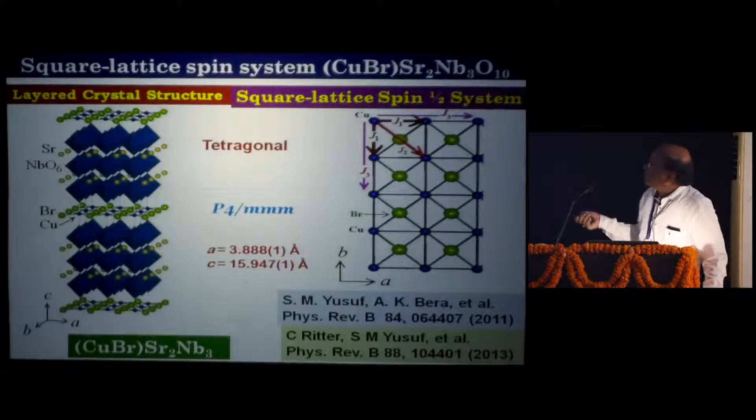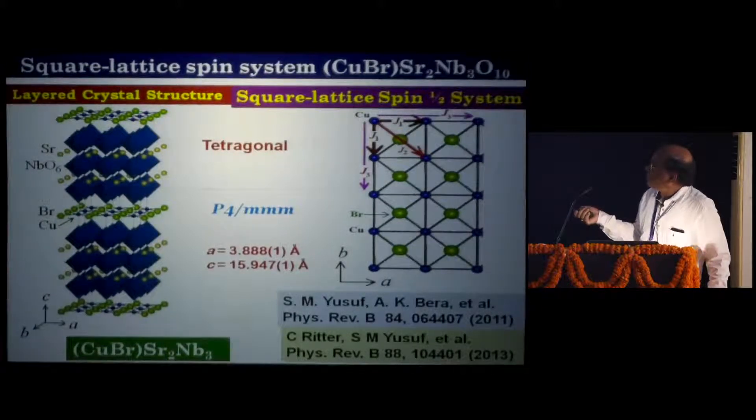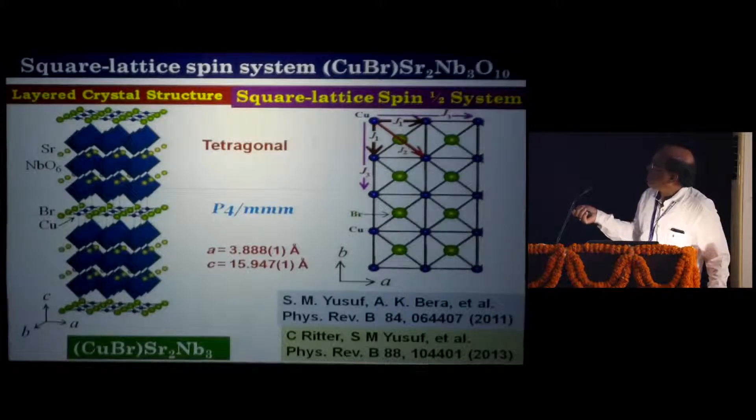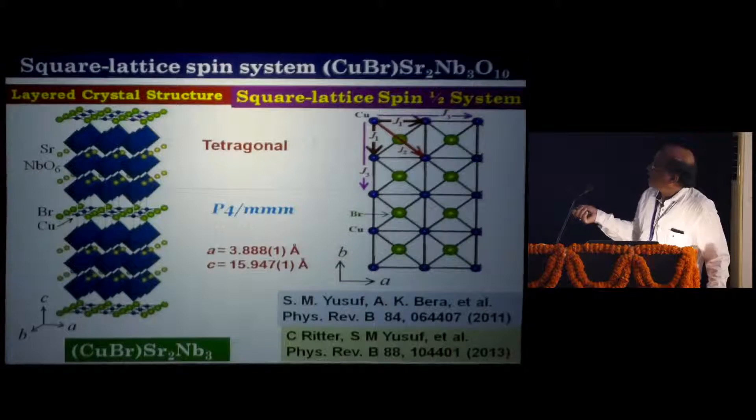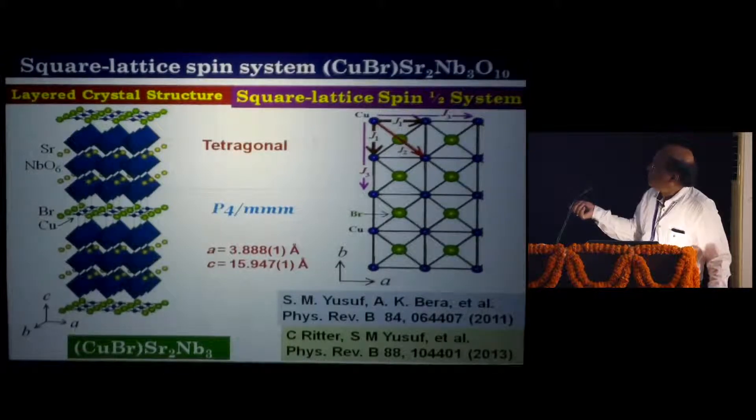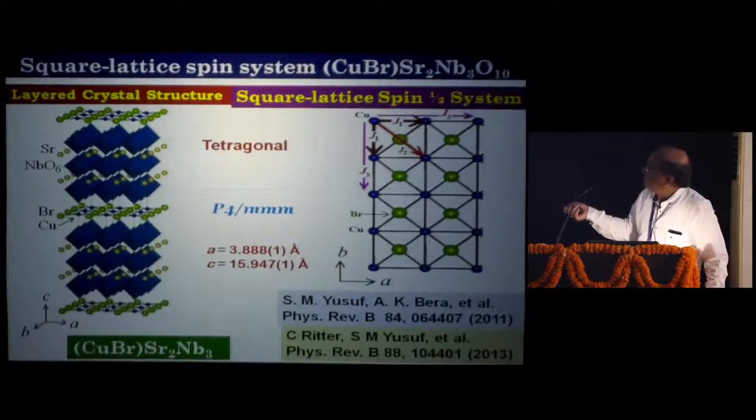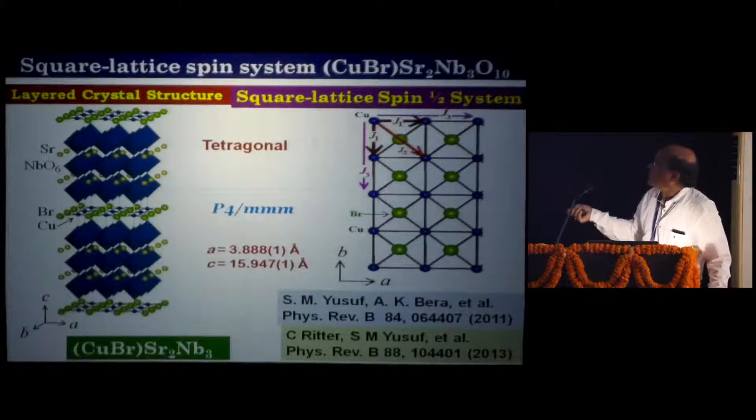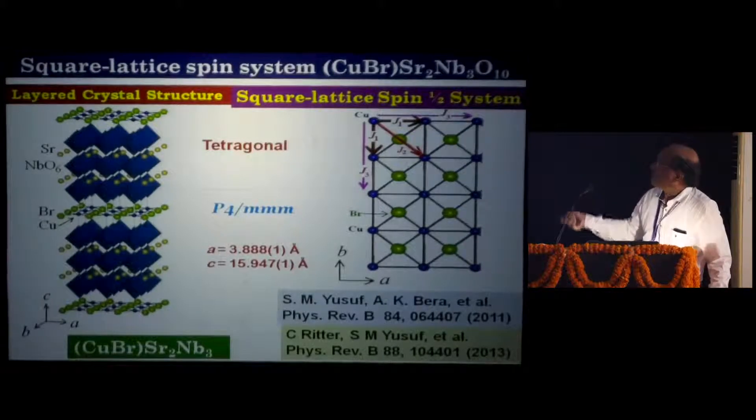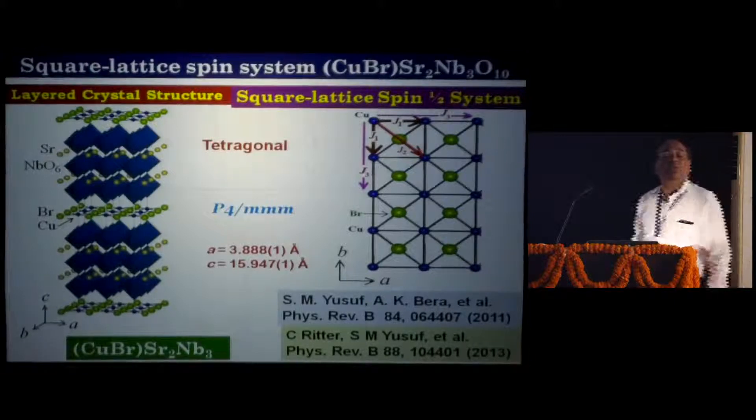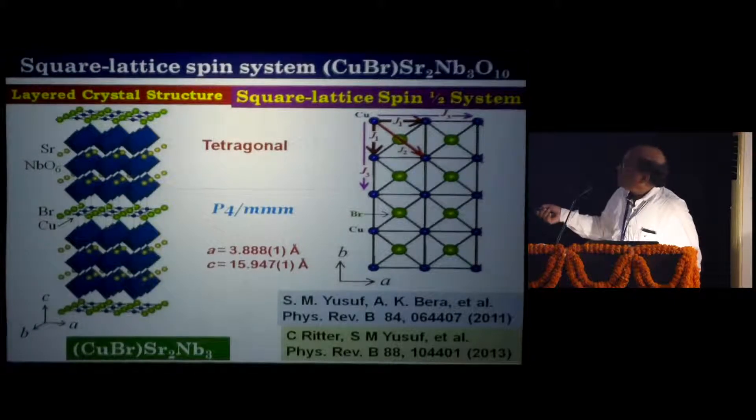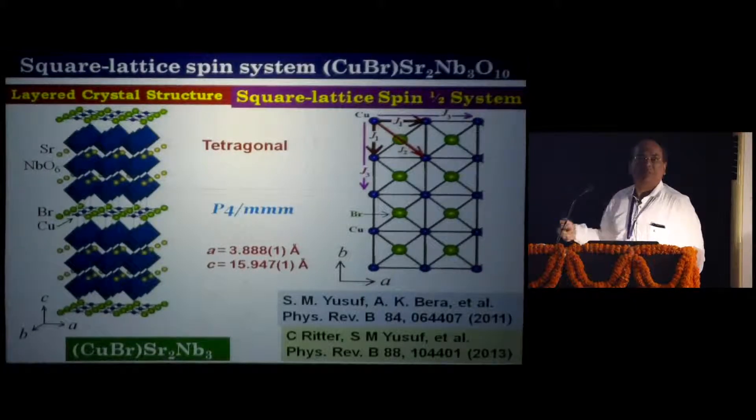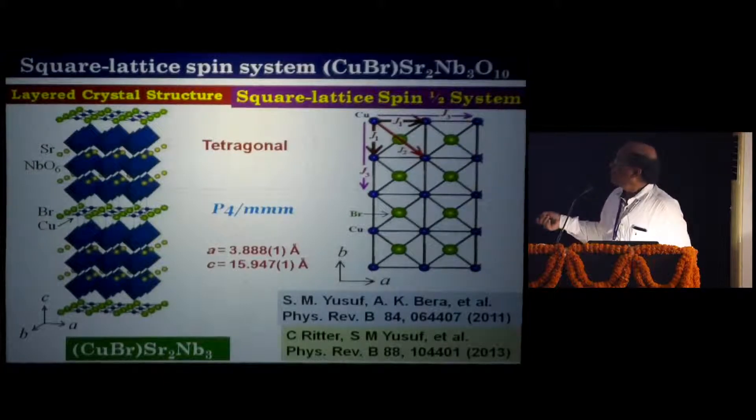First, if I consider a spin system which is involving copper, copper is spin half. This blue one, if you see, this is a copper layer where copper forms this kind of square lattice. These are the bromine. This copper layer and this is another copper layer, please look at the c-axis, crystallographic c-axis. This kind of crystal structure we get by doing neutron diffraction.